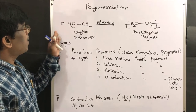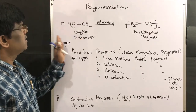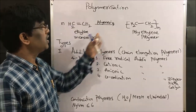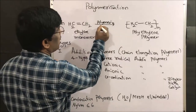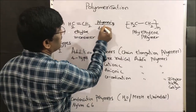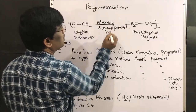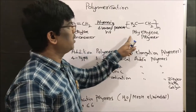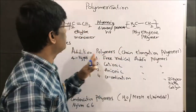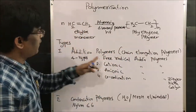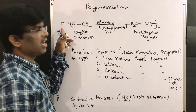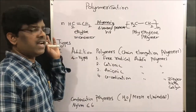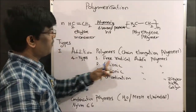For example, ethylene monomer upon polymerization using dibenzoyl peroxide undergoes free radical addition polymerization to give polyethylene as the polymer. Let us now take each type one by one.